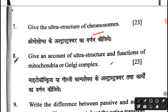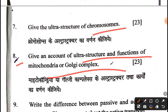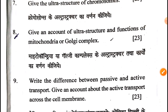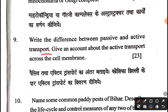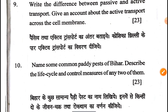Another question asked for an account of the ultrastructure of the chromosome. Questions also covered the Golgi body, Golgi complex, and mitochondria. Further questions included: what is the difference between passive and active transport? And give an account of active transport across the cell membrane.